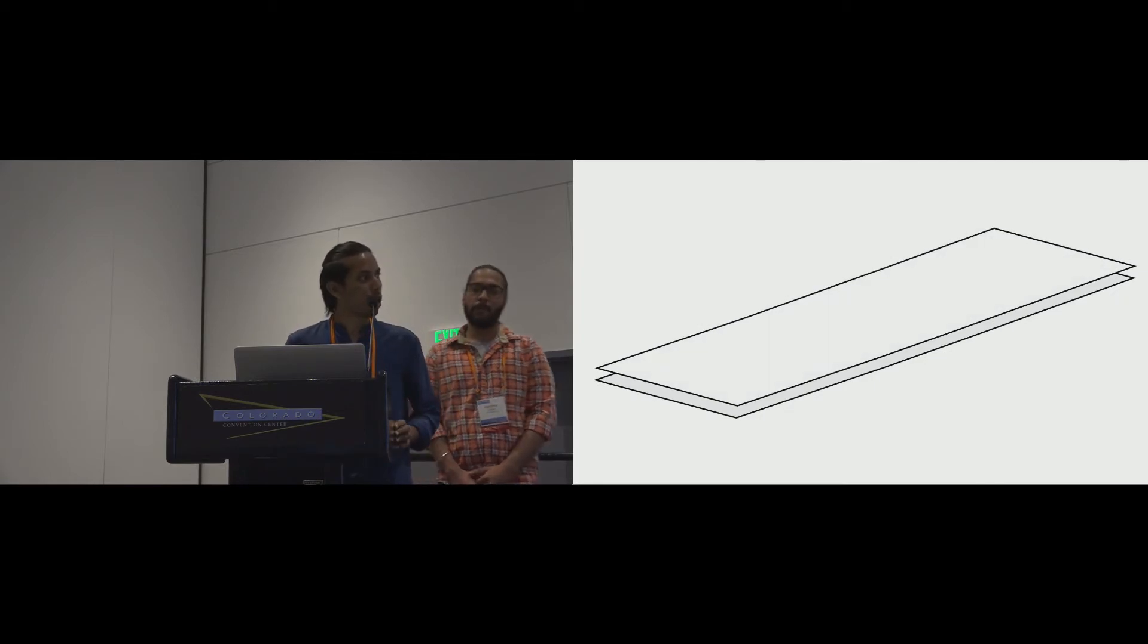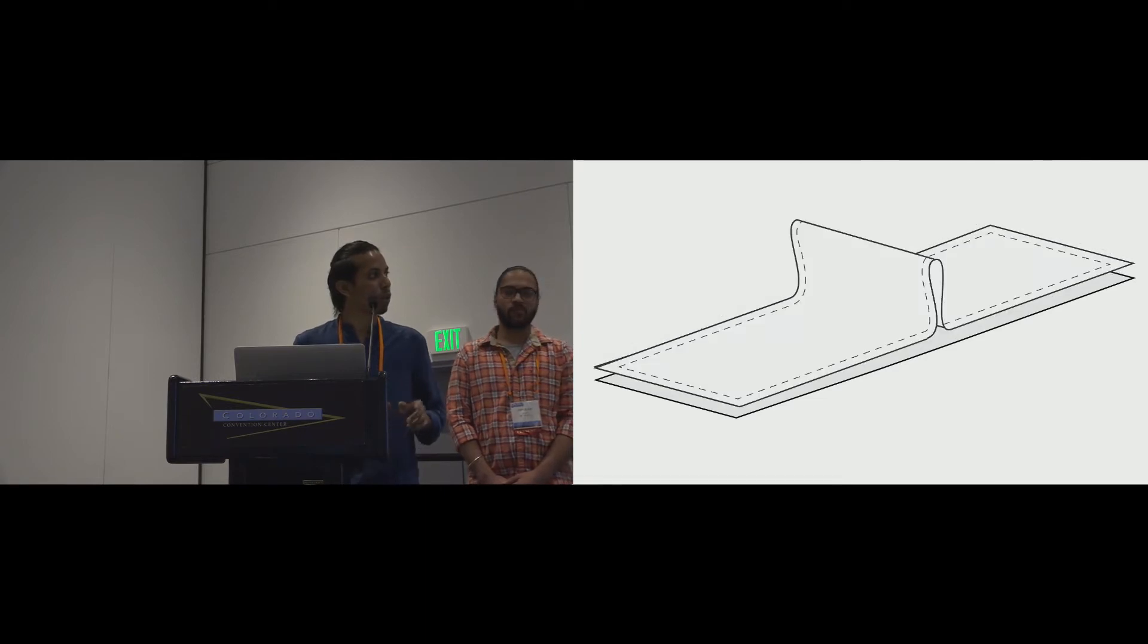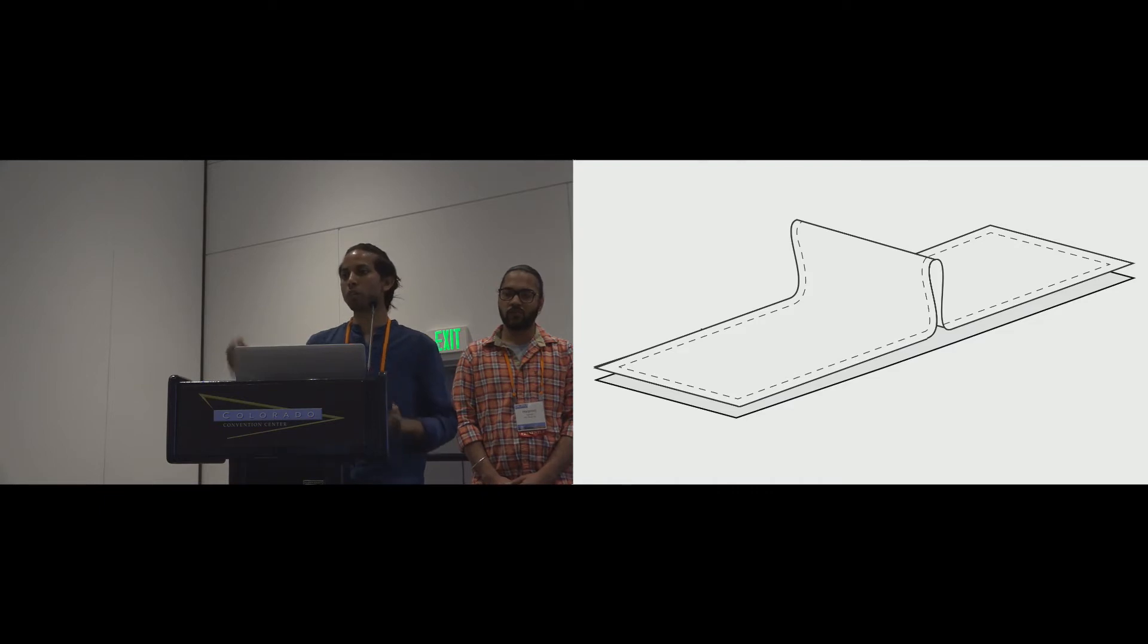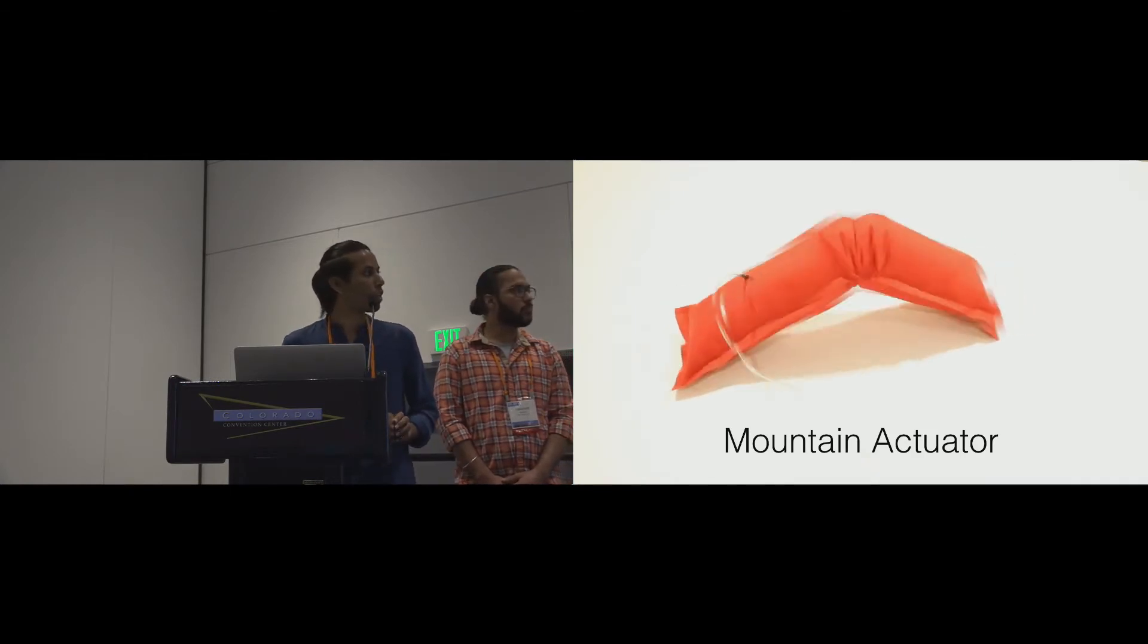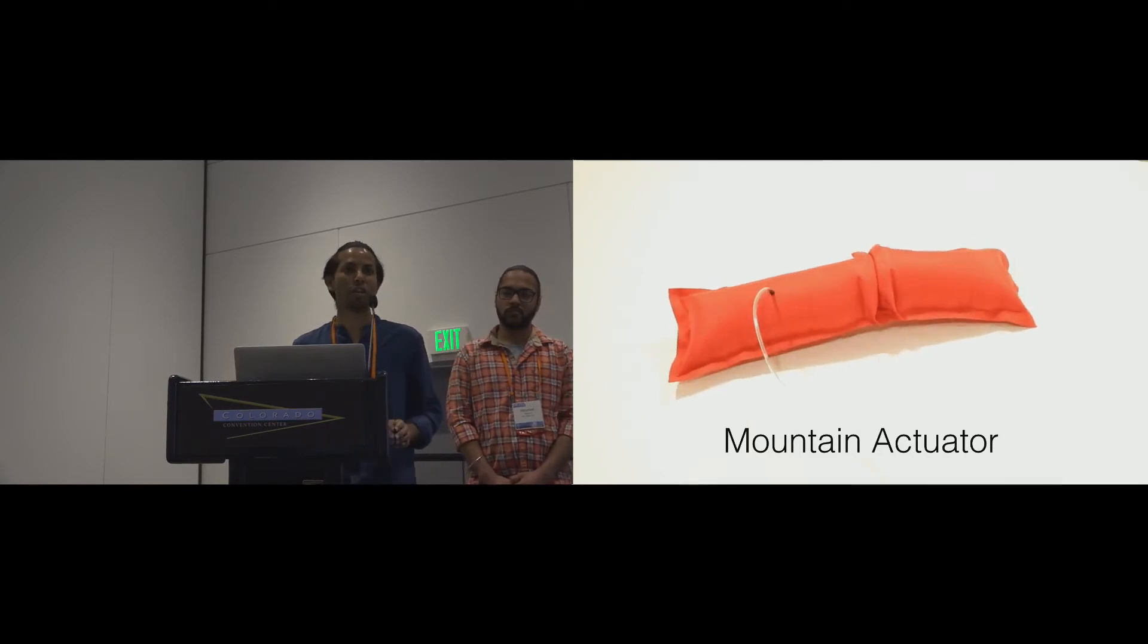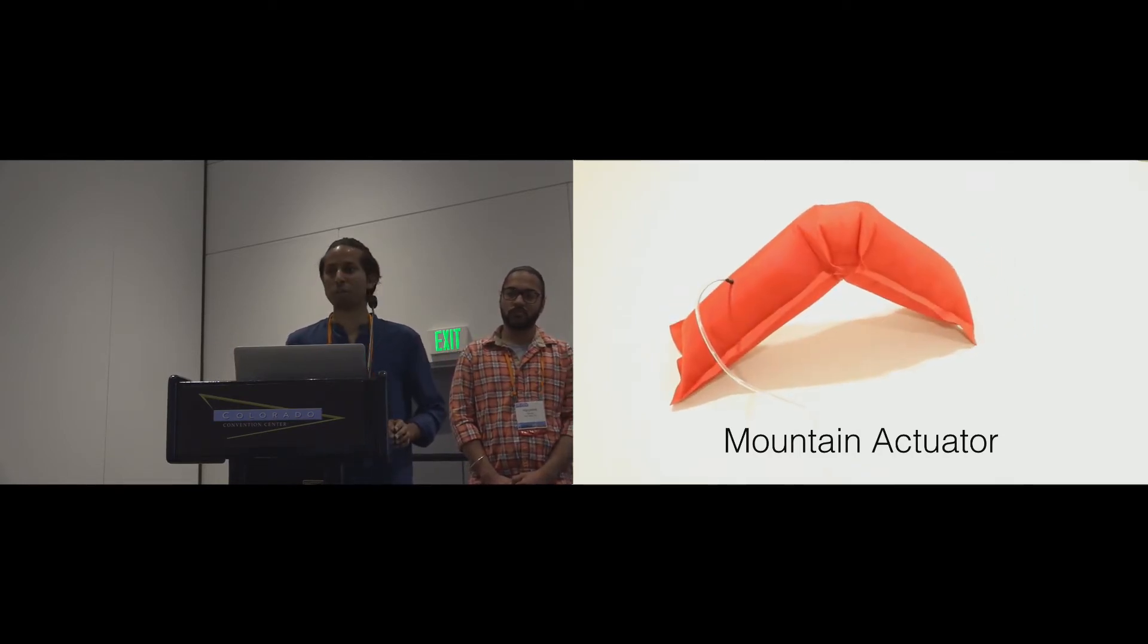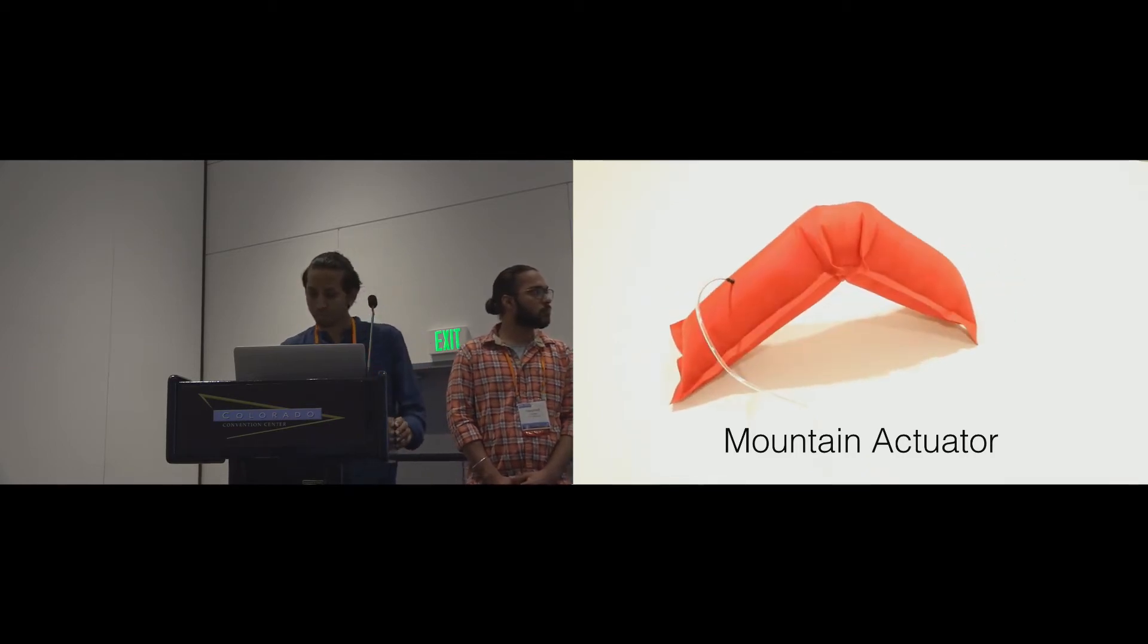And to fabricate our object, as I said earlier, we take two layers of fabric and apply heat and pressure to create seams and define the shape of the object. However, an additional step that we do in the process is introducing a fold in one of the layers. And this fold then goes on to become the actuation mechanism that's embedded in the object itself. And we call it the mountain actuator. And when we were submitting the paper to the conference, we were thinking about what should we call the actuator, what name could it be better than a mountain, in contrast with a valley.